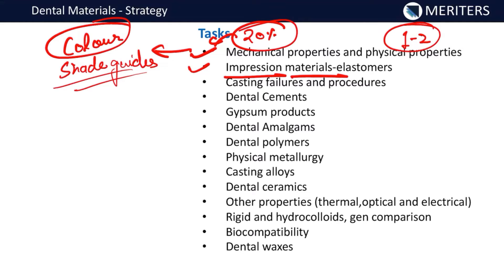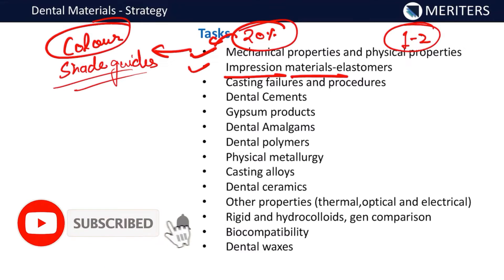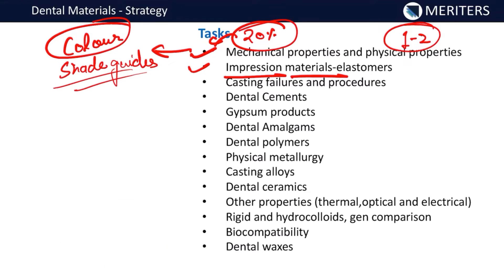Other topics from mechanical and physical properties include the stress-strain curve, modulus of elasticity, coefficient of thermal expansion, and related graphs. A lot of graph-based questions are asked from mechanical and physical properties. If you are giving 10 hours to dental materials overall, almost 20 percent of your time should be concentrated here.